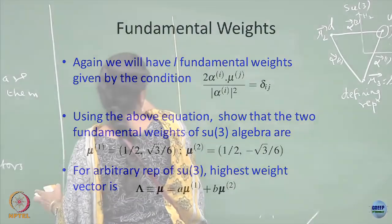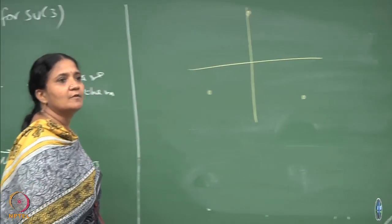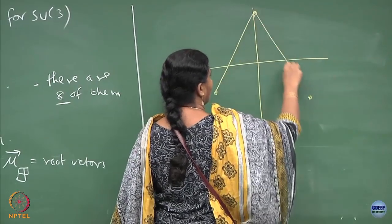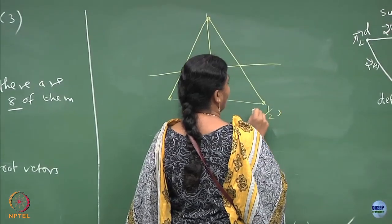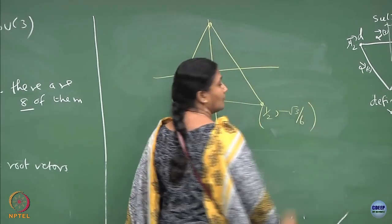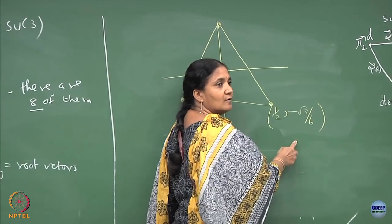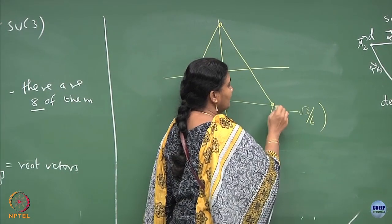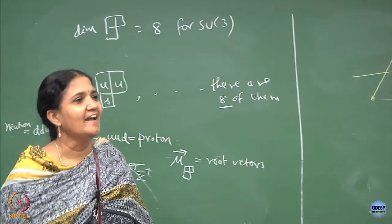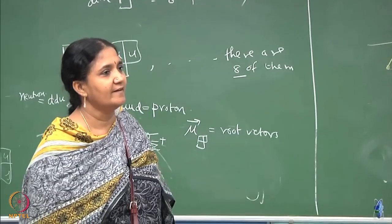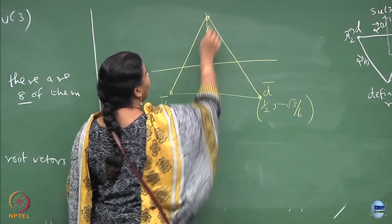So how does it look? I will have a point here and two points here. This will be your (1/2, −) configuration, and this will turn out to be your highest weight state — sometimes people call this D-bar. The bar denotes the anti-particle; it is an anti-quark diagram. So this will be D-bar, this will be U-bar, and that will be S-bar.